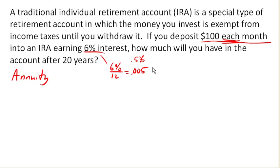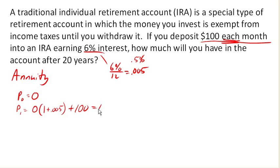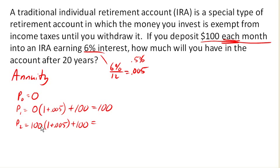We're only earning interest on the money that we've already saved. So we start out with no money in the account, and after one month we earn interest on that $0 — so we have our original $0 plus half a percent interest, meaning we earn no interest. But we deposit $100, so after one month we have $100 in the account. In the next month, we have $100, so now we're going to actually earn our half a percent on that $100, and we're going to deposit another $100 — earning 50 cents worth of interest.